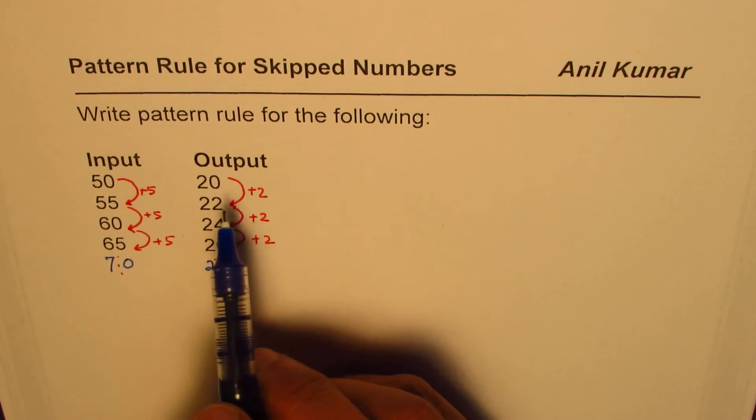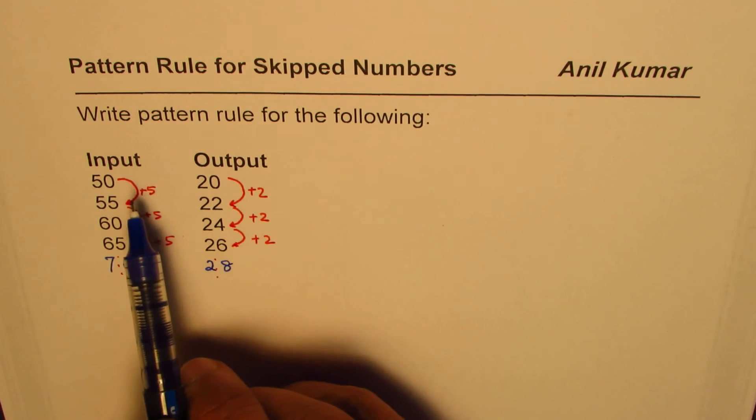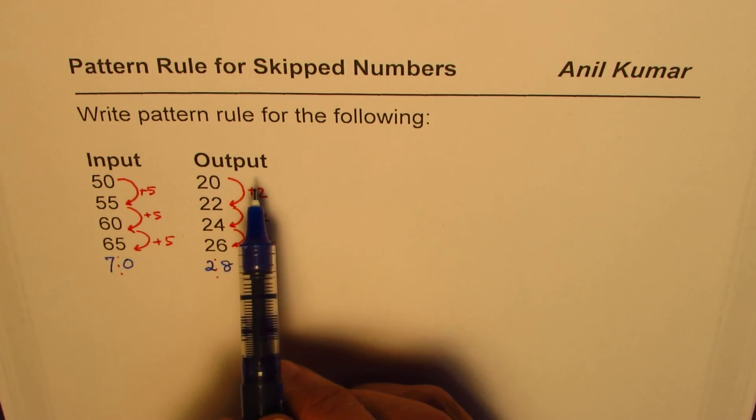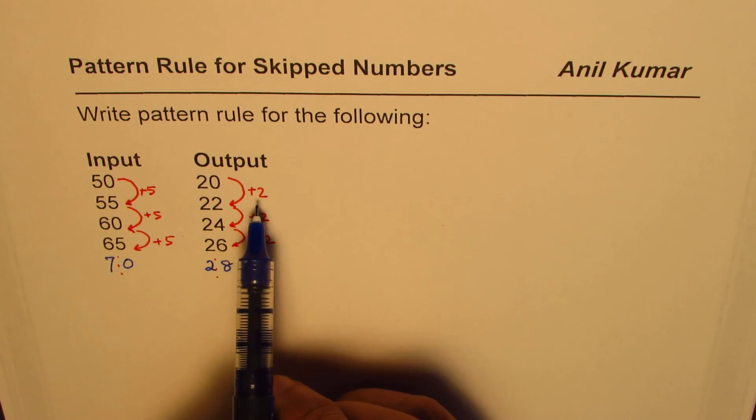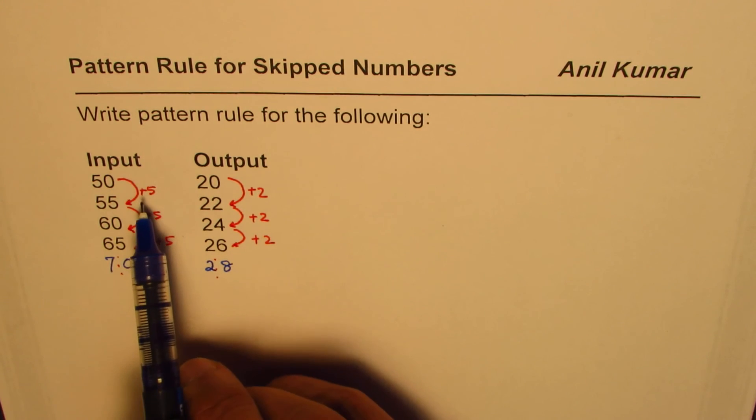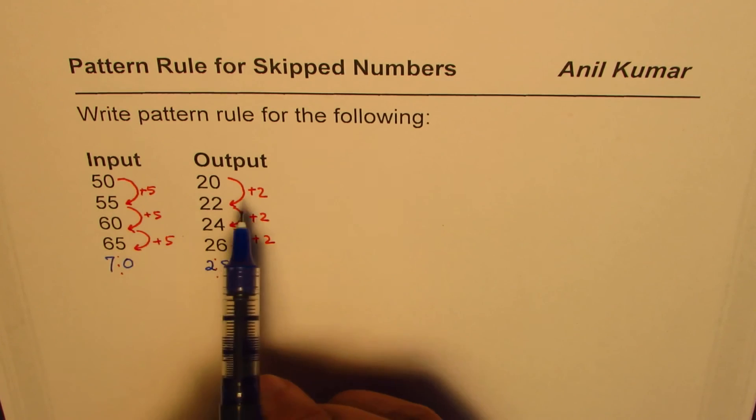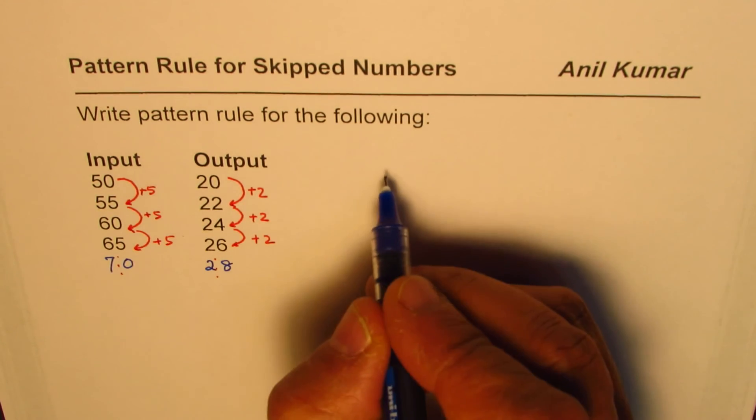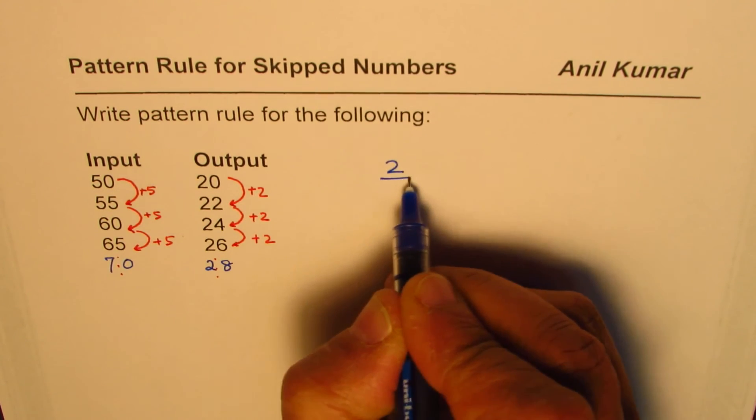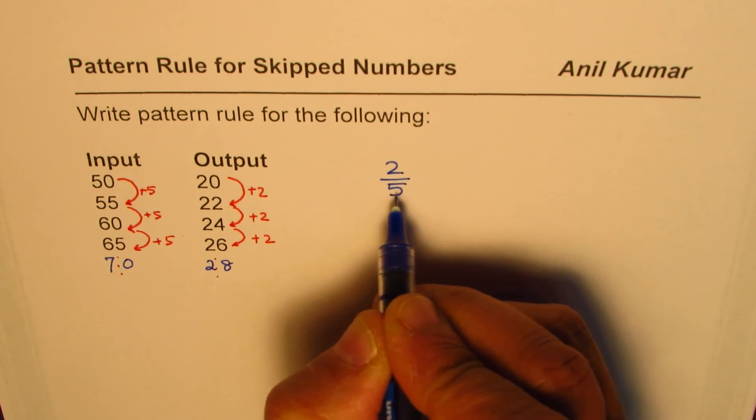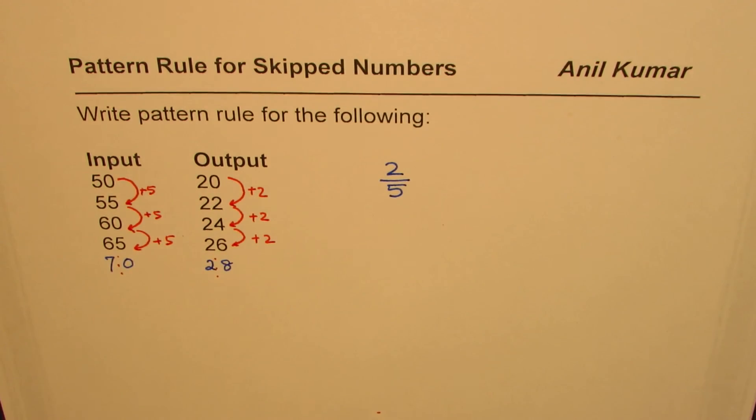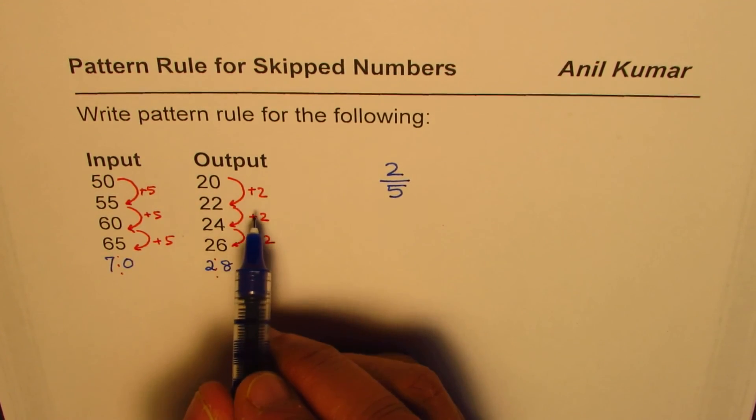Now since output is increasing by 2 for every increase of 5 in the input, the number of our interest is 2 divided by 5 - that relates these two things. How do we find it? By comparing the two increases.